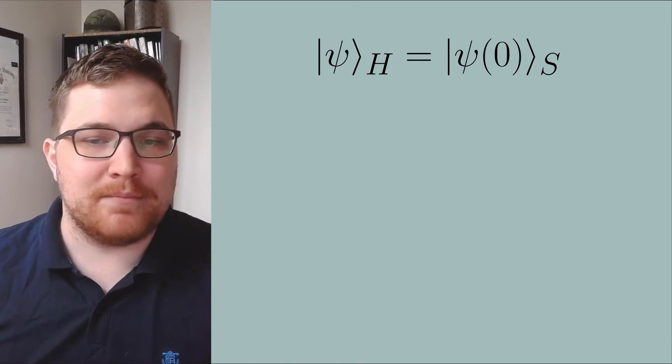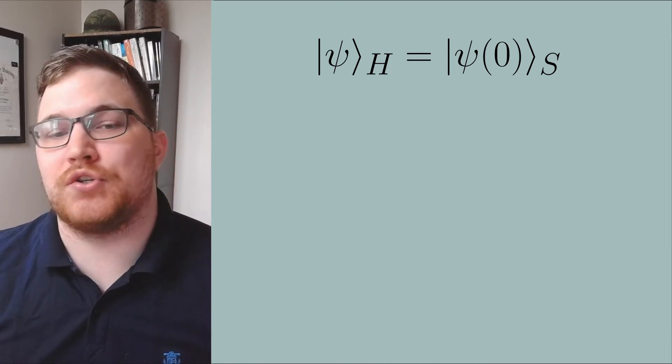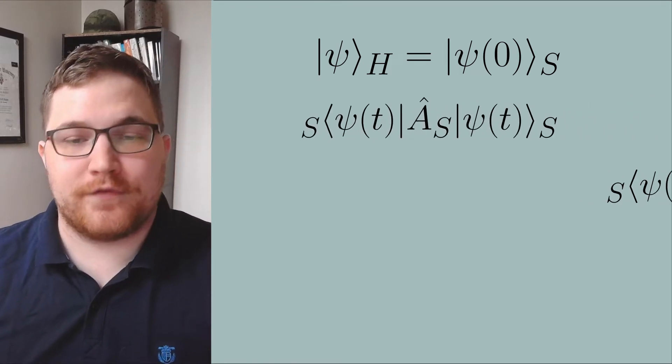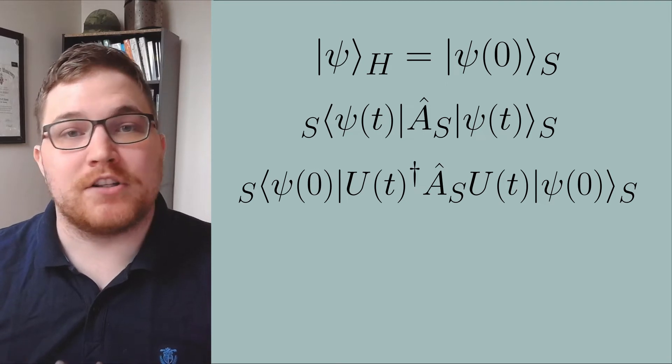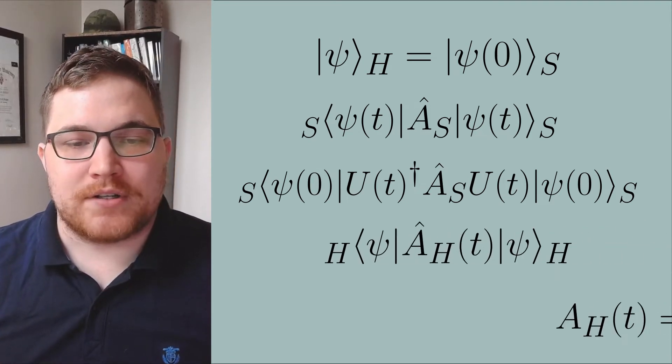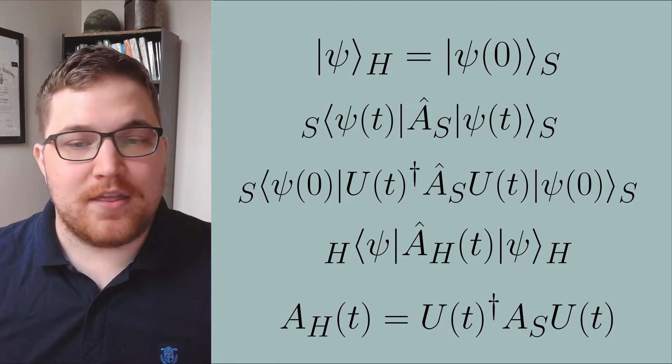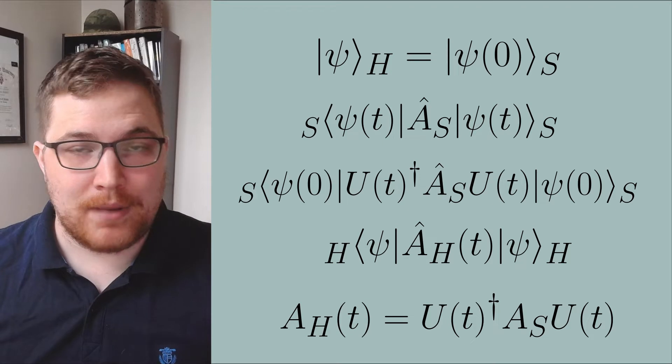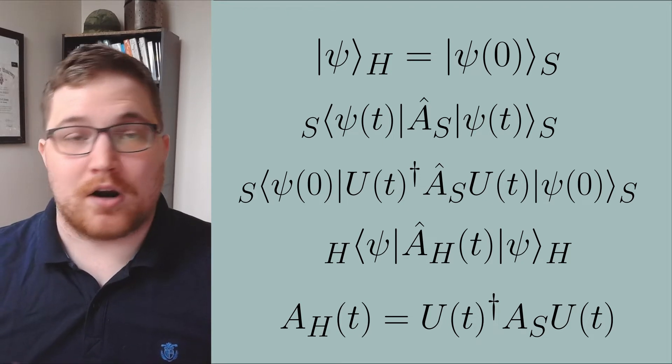This can be easily seen by just looking at the equation for our expectation value in time. We transfer the unitary matrices responsible for time evolution to the observable, and now we understand that the observable evolves in time and the states are fixed.